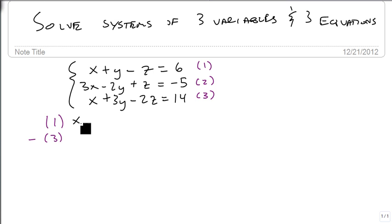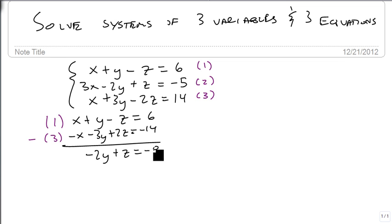So we're going to copy equation one exactly as it's written. And we're going to change equation three to minus x minus 3y plus 2z equals minus 14. So when we add these together, the x's go away. We have minus 2y plus z equals minus 8.